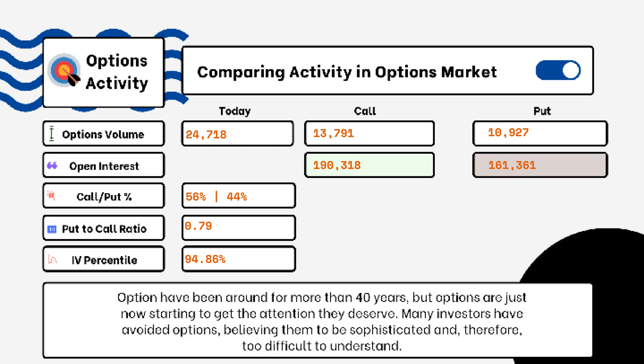We've provided details on today's option activity. What you'll be able to see here is options volume, open interest, implied volatility, put-to-call ratio, and IV percentile. One of the most popular indicators for traders is the put-to-call ratio.